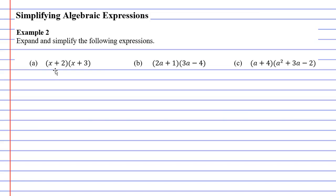Previously when we learnt to expand, you'd only have one term to the left of the brackets and you would connect it with little arcs. If the 2 was on its own, we would have connected the 2 to the x, multiplying x by 2, and also multiplied the 2 by 3. But because we've got a set of brackets, we're not only multiplying the 2 by x and 3 but also the x by x and 3.